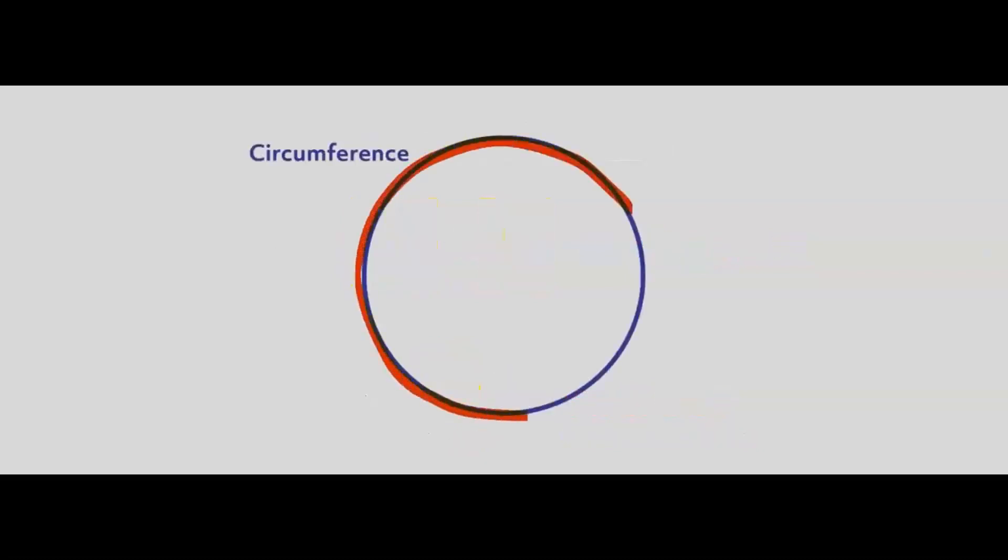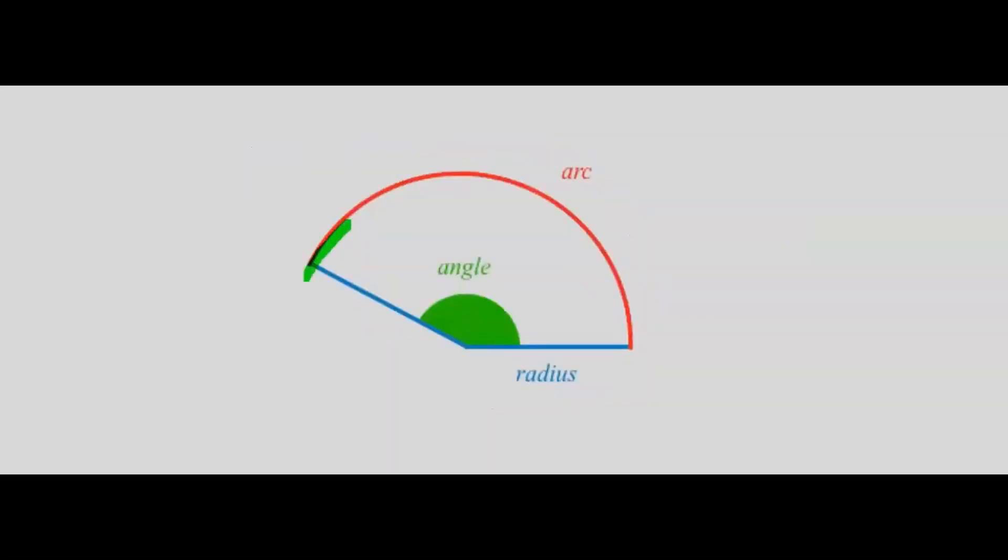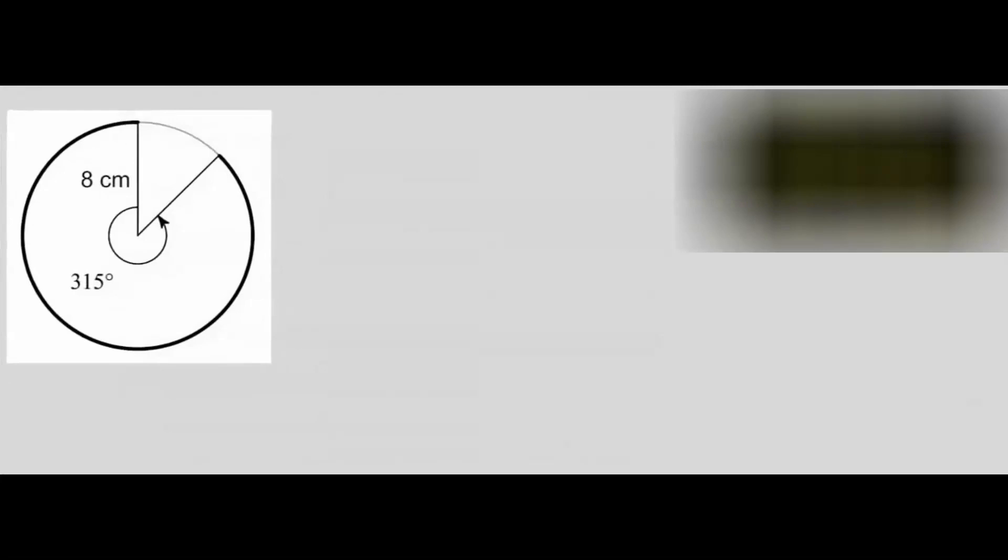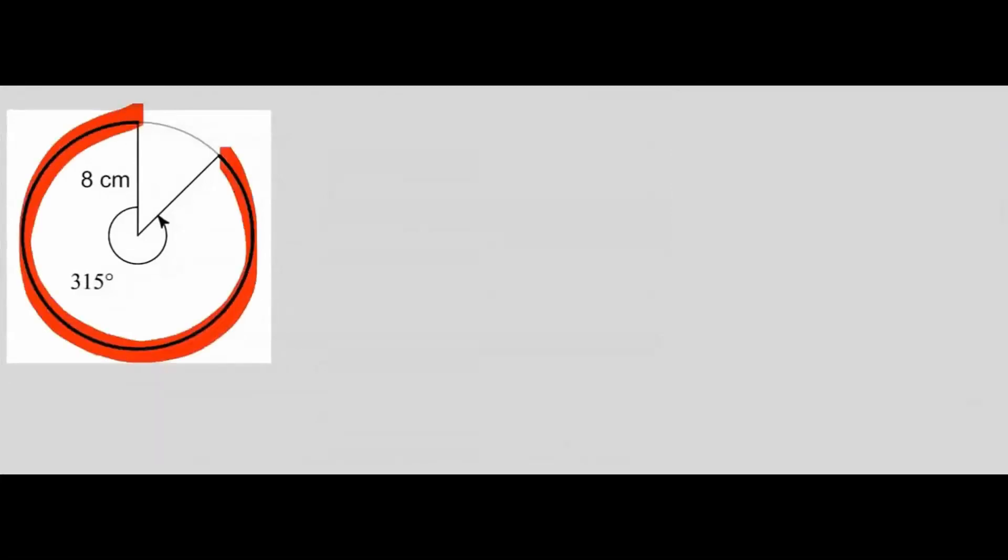The circumference of a circle is the total length if we unroll it. Any length short of the circumference is known as an arc. Next, let's find the length of this arc. The first step is to consider the central angle.